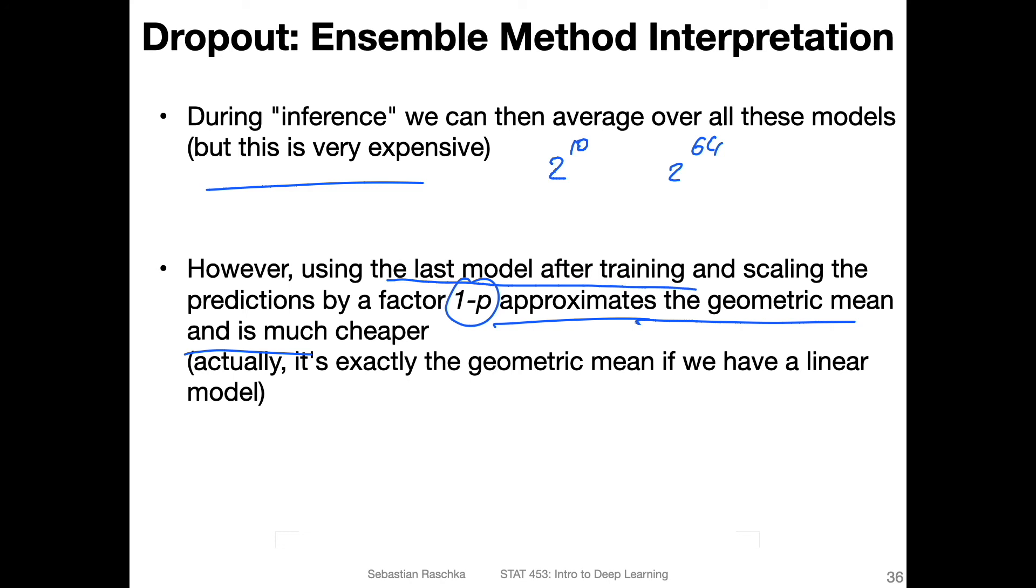So we don't have to create all these different models, we only consider the last model after training. So just the model that comes out of training, and then this scaling will essentially compute an approximated version of that geometric mean, as they mentioned in the original dropout paper. And they also argue essentially, if you have a linear model, then the geometric mean would be actually exactly like this scaled version here.